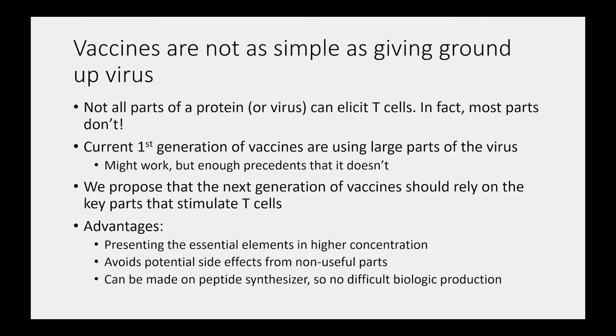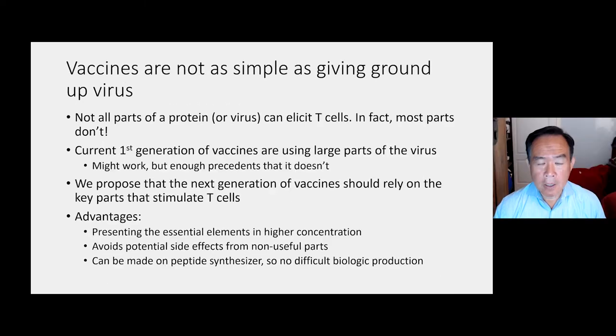So why do we want to identify what the T cell recognizes? Well, first of all, a vaccine is not as simple as giving a ground up virus. Now, the very earliest vaccines, like when Edward Jenner and Louis Pasteur made their vaccines, they could basically just take the virus, grind it up and give it to people. And that worked. That's true for certain viruses, but it's definitely not true for coronaviruses and other types of viruses. In fact, actually, most parts of a virus don't increase the amount of T cells when they're in our body.